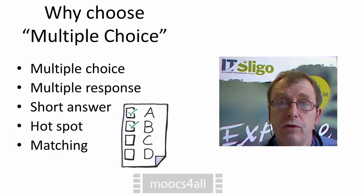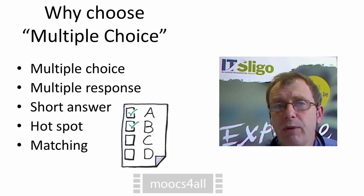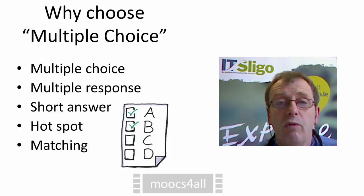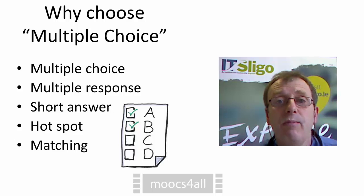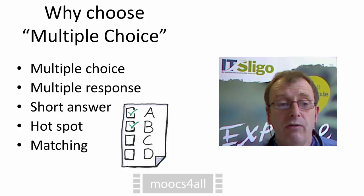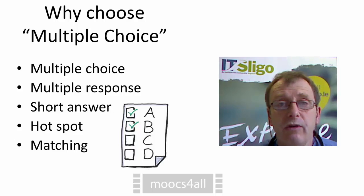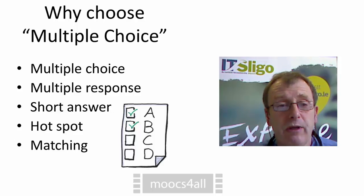First of all, why would you choose multiple choice questions? I do have a preference for multiple choice questions, possibly because they're the simplest to create. Multiple response is a version where there are more than one correct answer. Short answers require worrying about learners misspelling words. Hotspots use images and you must define areas that are correct or incorrect — it's often easier to include a labelled image with a multiple choice question asking which label is correct. Matching questions require matching items in one list with another, but they can often be reformatted as multiple choice questions and are easier to write.